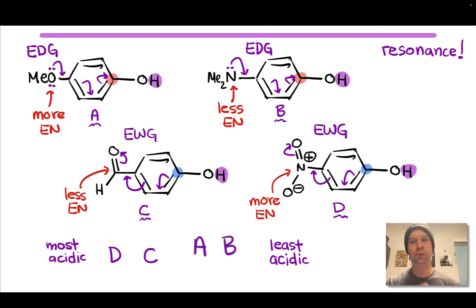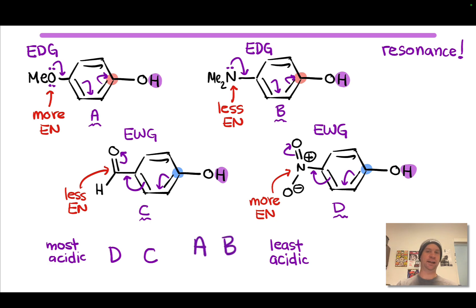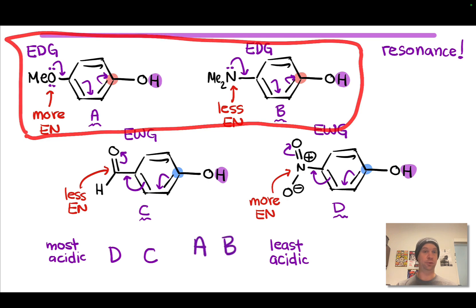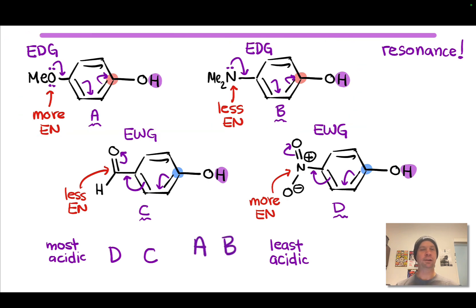To recap: it was all about considering resonance effects first — which groups are donating or withdrawing by resonance — broadly grouping substituents into electron-donating versus electron-withdrawing by resonance, which lets us divide the compounds in half. Only after that did we dig into electronegativity to differentiate within each group. For electron-rich phenols with donating groups, electronegativity is not as strong an effect as resonance, and that should be your default approach for problems like this.